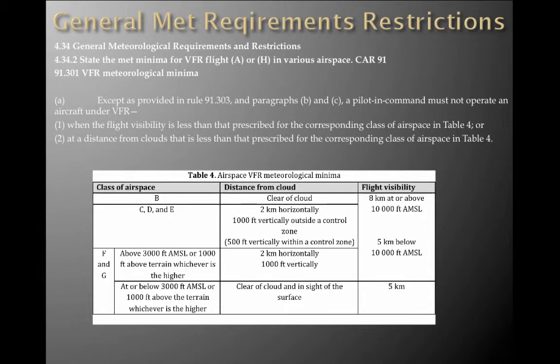So to recap: Class B — clear of cloud, 8K at or above 10,000 feet, or 5K below 10,000 feet. In C, D, and E — same flight visibility, but 2K horizontal and 1,000 feet vertical outside of a control zone, 500 feet vertical within a control zone. Then F and G above 3,000 feet — 2K and 1,000 feet vertical. At or below 3,000 feet or 1,000 feet above the terrain, whichever is higher — clear of cloud and in sight of the surface. Flight visibility 5K.